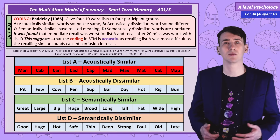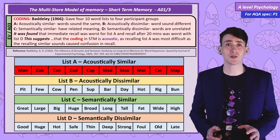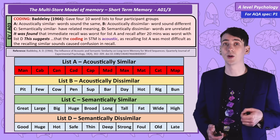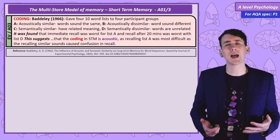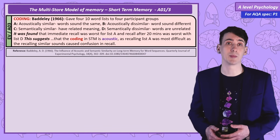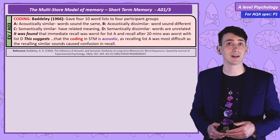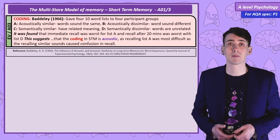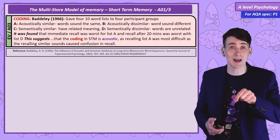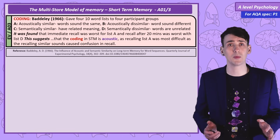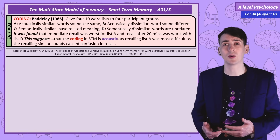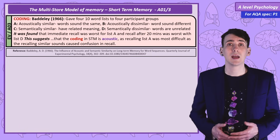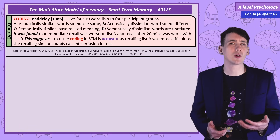Students often struggle with this conclusion — it's counter-intuitive to say that because short-term memory is coded acoustically, acoustically similar words are harder to recall. To help, here's a filing cabinet metaphor: if a cabinet is organised alphabetically, retrieving one file from across the system is easy. But if all the files are similar, it becomes more difficult to retrieve the specific one you want. The key point is that if a storage system is coded in a certain way, similar items become harder to recall individually.